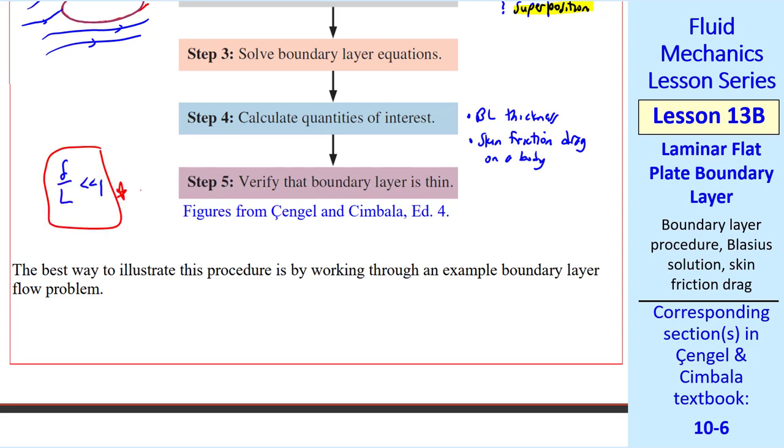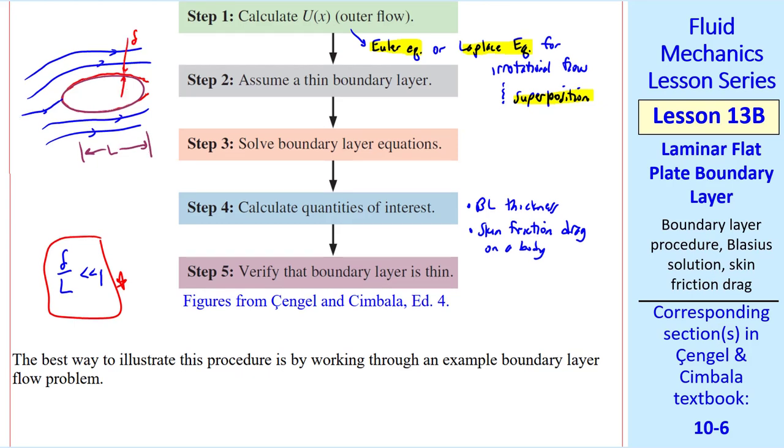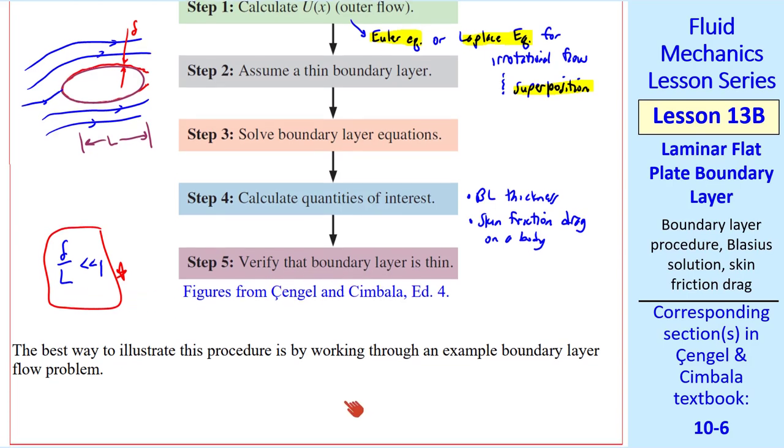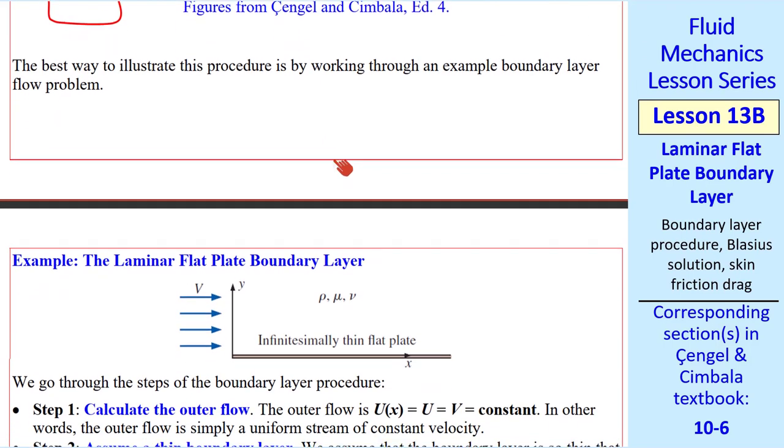Finally, step 5 is to verify that the boundary layer is thin. In other words, delta over L is very small. In a typical problem, L is associated with the body dimension, and delta is the boundary layer thickness. The smaller this ratio is, the more valid our boundary layer analysis.